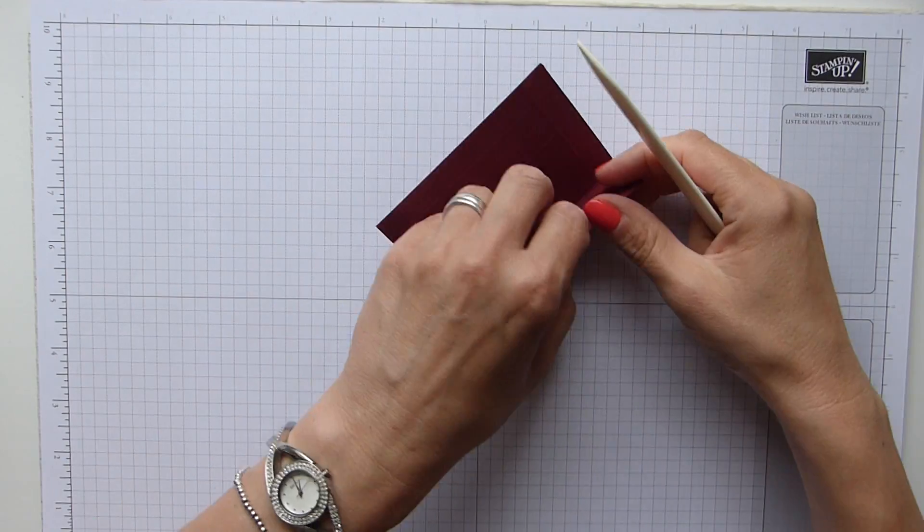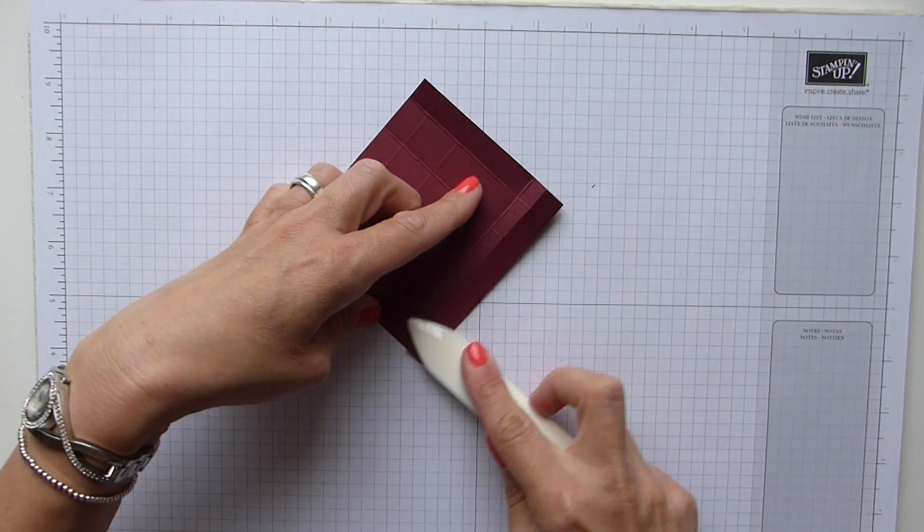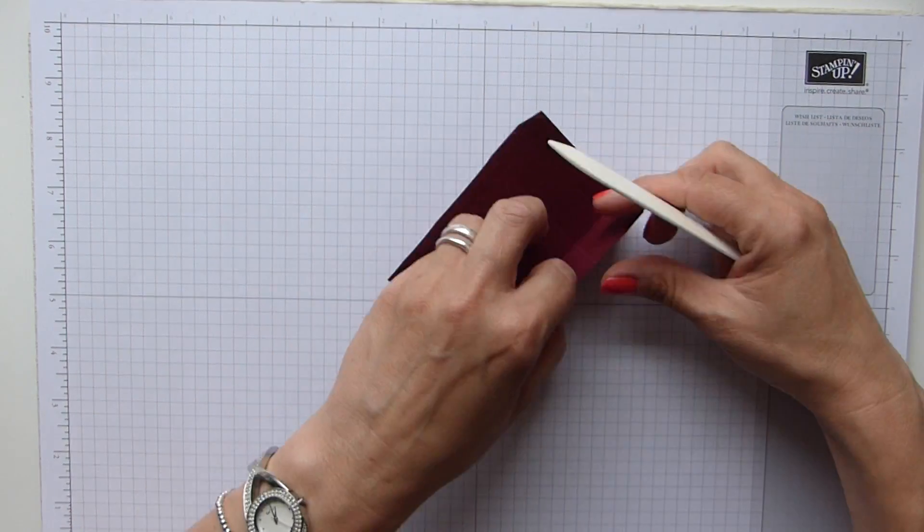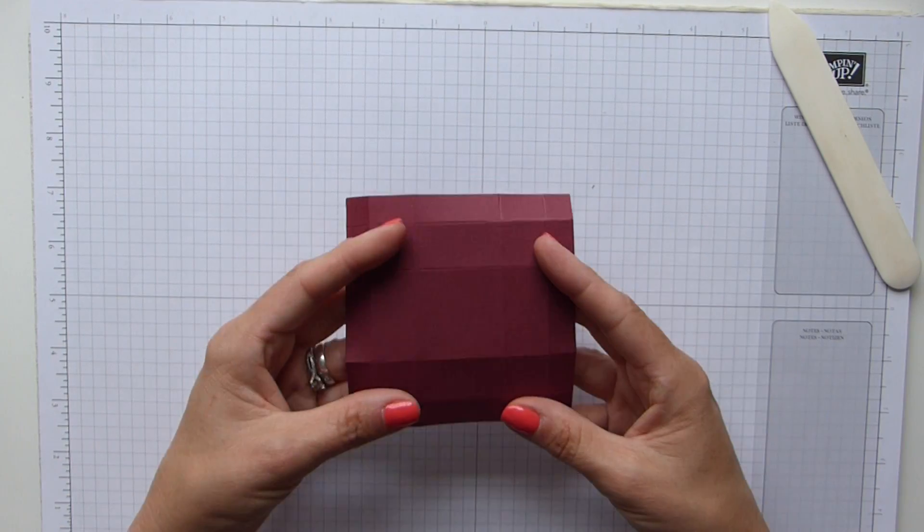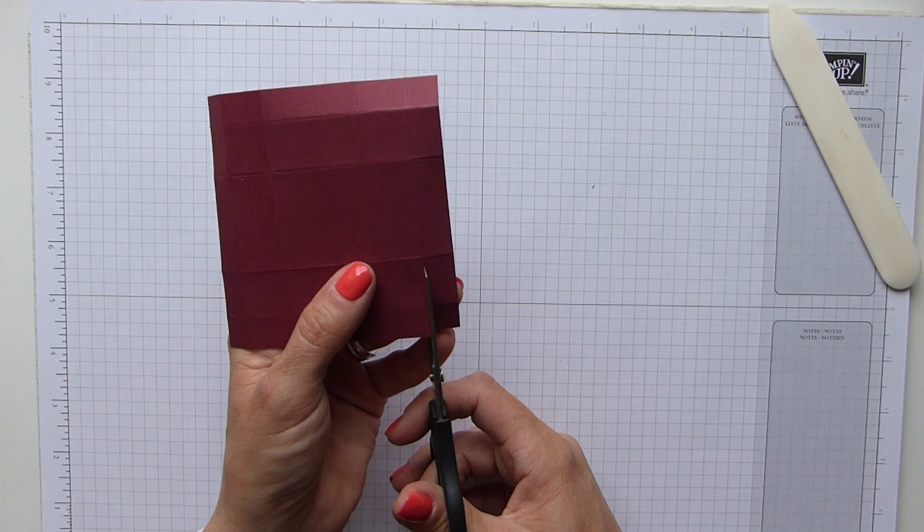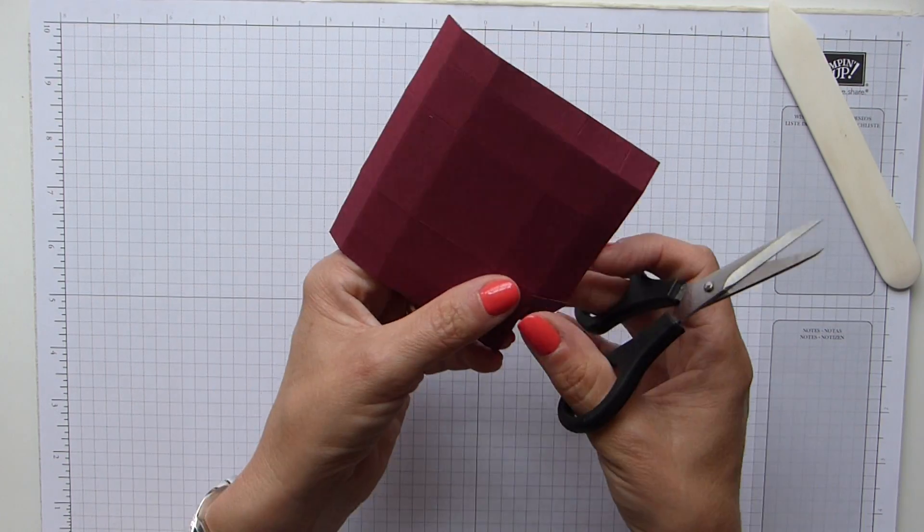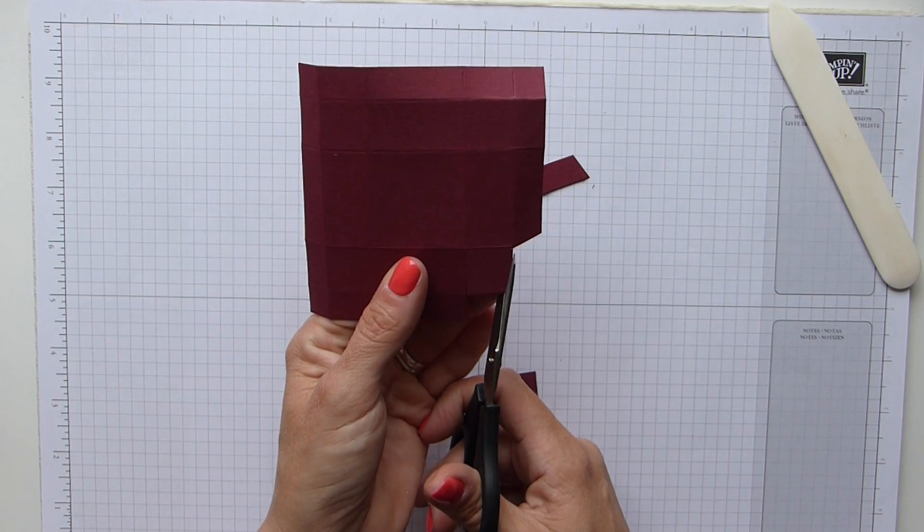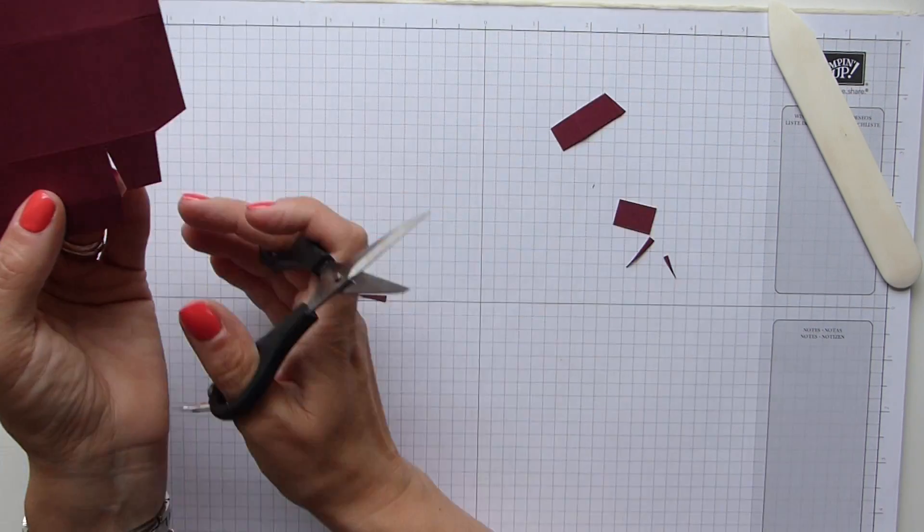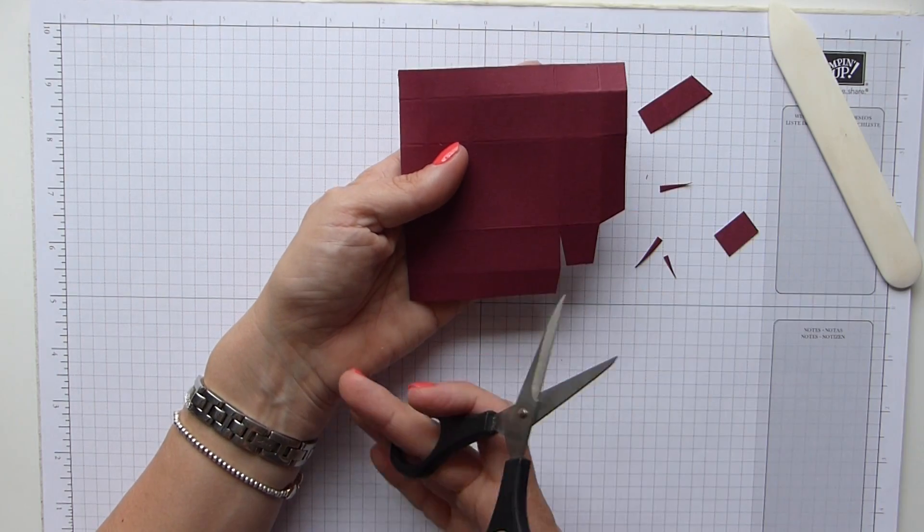So you would do that on both of your squares, and then we're going to fold and burnish all of those score lines. Okay. And then if you recently watched my hand stamped gift box, you will see that when I made the lid of the box I did this exact same cutting. So it's exactly the same for this one. So we're just simply cutting away wedges on all of it basically.